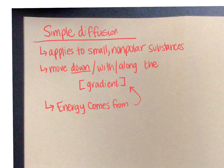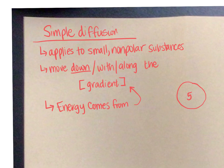Sometimes students are unsure about what that means. A concentration gradient simply means that you have one area — let's say that this is a cell — and inside the cell, let's say it's five parts per million of a molecule. But then on the other side of this membrane, you have a different concentration, let's say 123. So the fact that there is a difference in the amount of substance inside the cell versus outside the cell means that there's a concentration gradient, and substances are going to move from high concentration to low concentration.